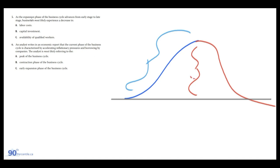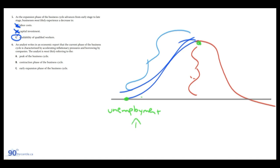This would result in a decrease in labor costs? No — in an expansion there's going to be upward pressure on labor costs. Capital investment? No — if the economy is expanding, companies are going to be investing more. So we're left with availability of qualified workers, which is the answer. You can think of it this way: unemployment can be higher in early recovery than at the peak, where we're essentially at a low. As we go up the graph, more and more people get hired and the availability of the remaining workforce — people who don't have a job — is going to decrease.